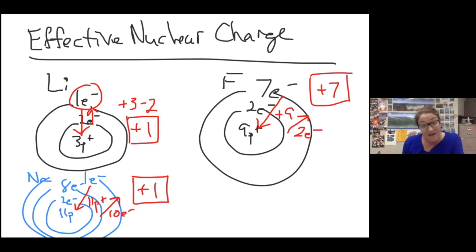What this means is effectively, fluorine's outer electrons are pulled inward with more force than lithium's are because of a greater ratio of protons to electrons between it and the nucleus. So effective nuclear charge is always positive, and it's the same as the group number.